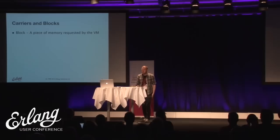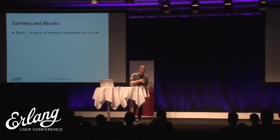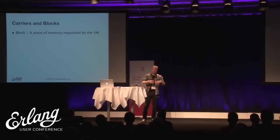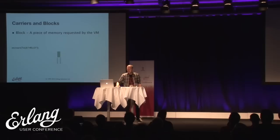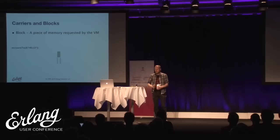A block of memory is a continuous C address space that starts at a pointer and lasts for X amount of bytes. The virtual machine can request a block from the allocator - for instance, requesting a process heap of 233 words. For an ETS table, when you do an ETS insert of a tuple, the tuple itself might be about three words in size and gets inserted into the ETS table.